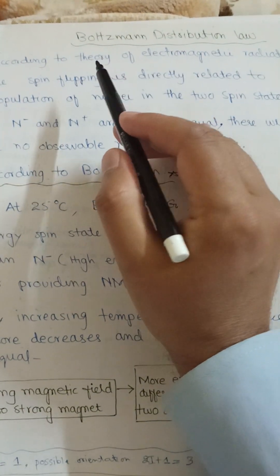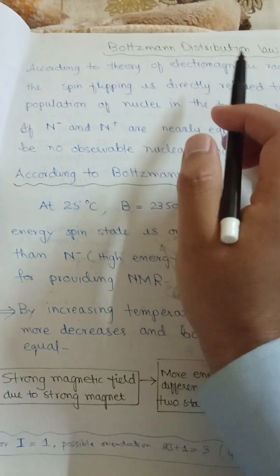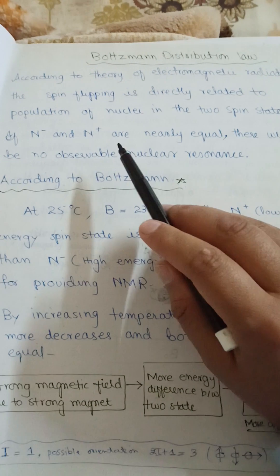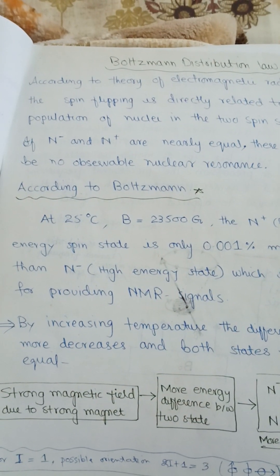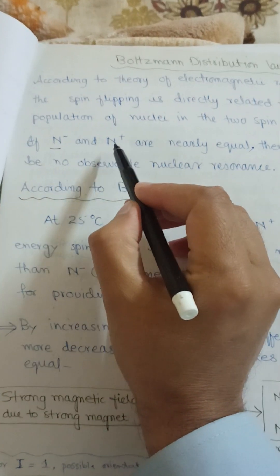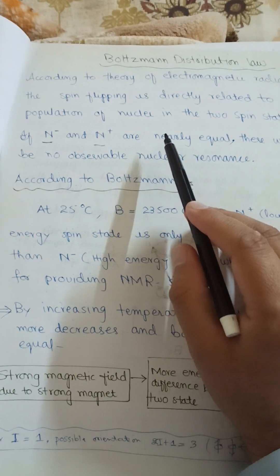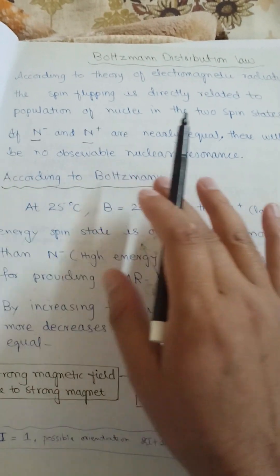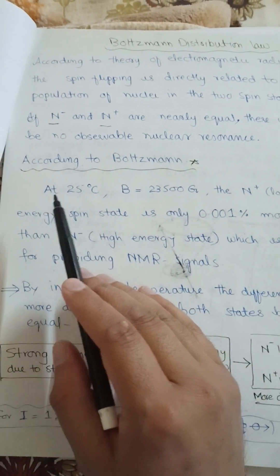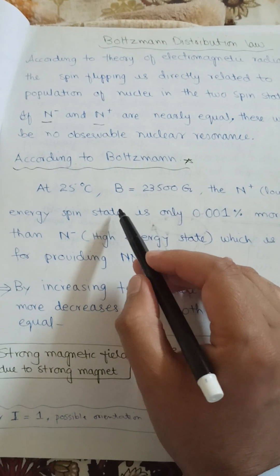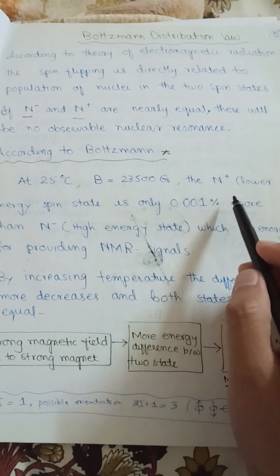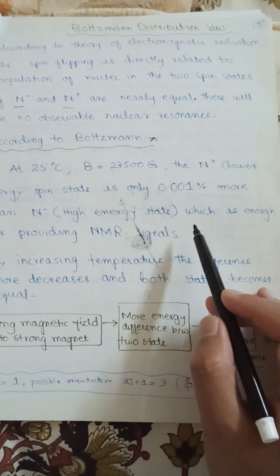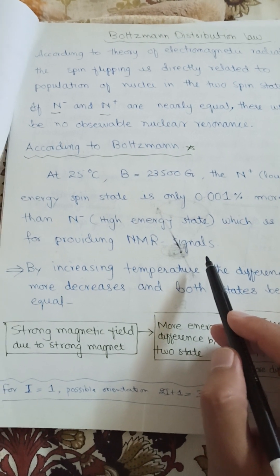Before discussing types of spin flipping, we will discuss Boltzmann distribution law. According to the theory of electromagnetic radiation, spin flipping is directly related to the population of the nuclei in the two spin states. We represent the beta spin state as N-minus and the alpha spin state as N-plus. According to Boltzmann's law, at 25 degrees Celsius and an external magnetic field of 23,500 Gauss, the N-plus (lower energy spin state) is only 0.001% more than the higher energy spin state, which is enough for providing NMR signals.